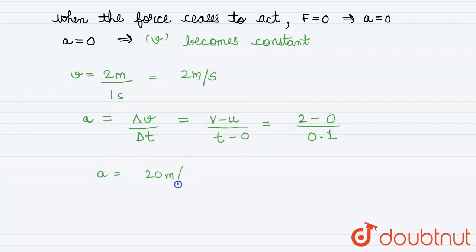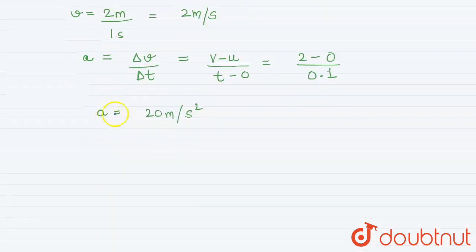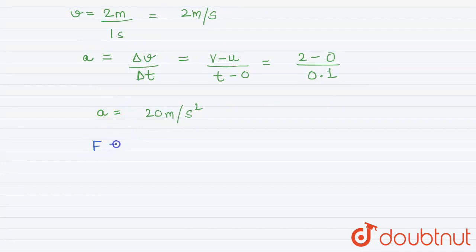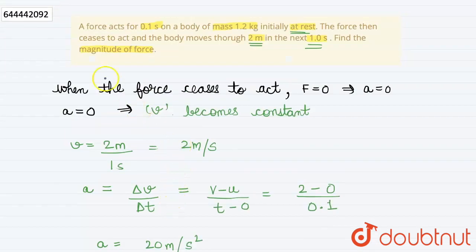Now we know the formula for force which is mass into acceleration. Now mass is given as 1.2 kg and acceleration we calculated as 20 meter per second square. Therefore, force becomes 24 newtons. Therefore, this is the answer. Thank you.